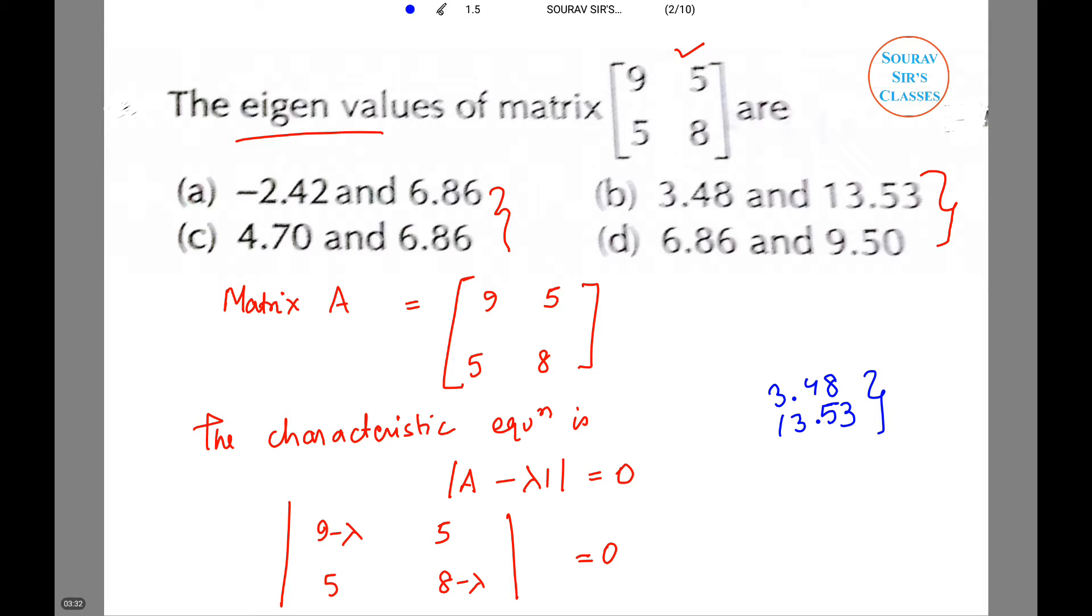So let us see which option matches with our answer that we have computed. It is clear that option B exactly includes those two eigenvalues which we have derived, so B is the correct option. I hope this short tutorial on Civil Engineering where we discussed a problem related to Engineering Mathematics was helpful.